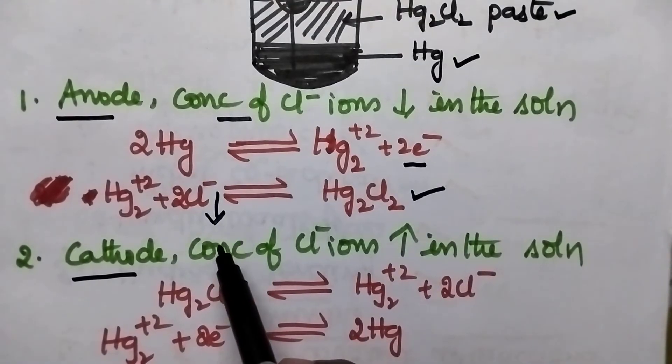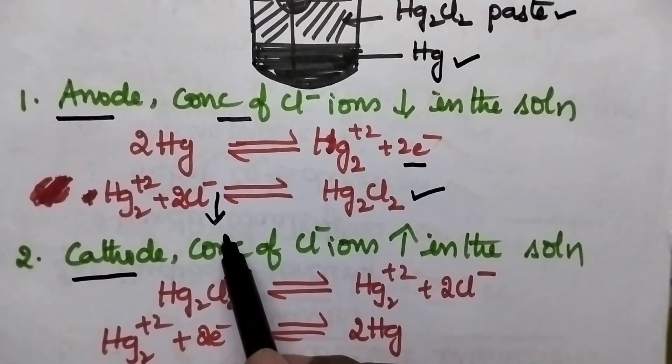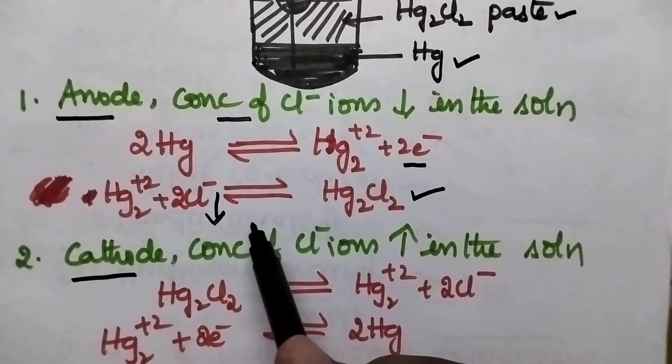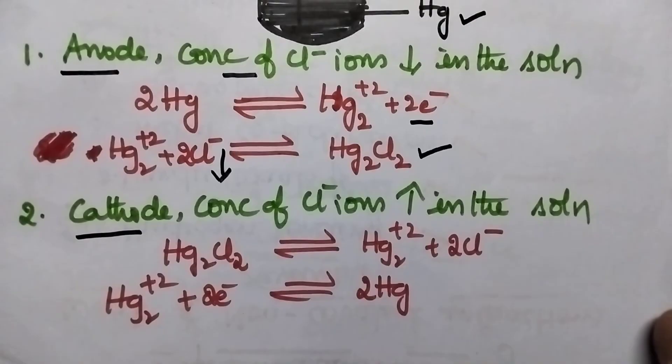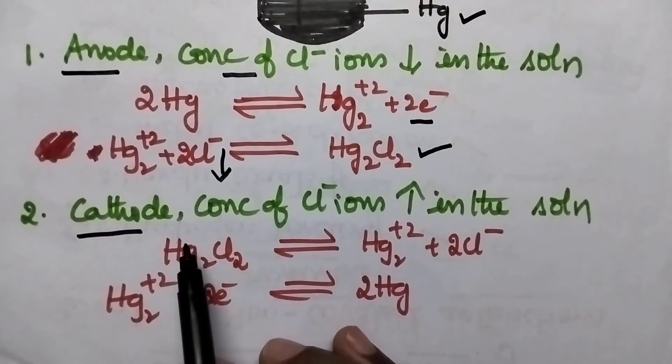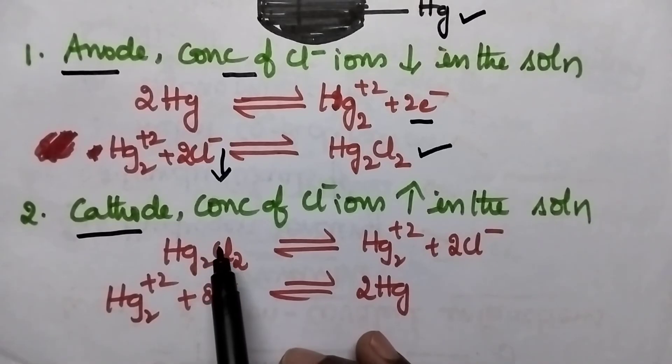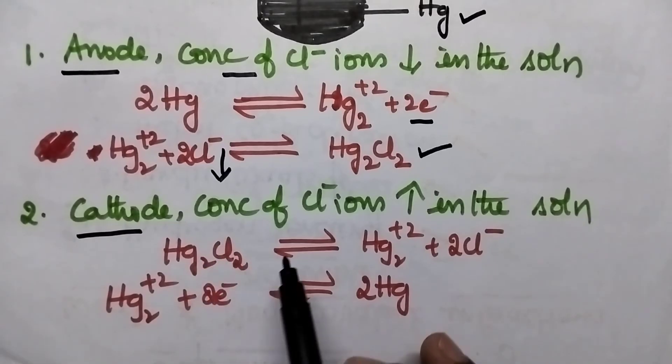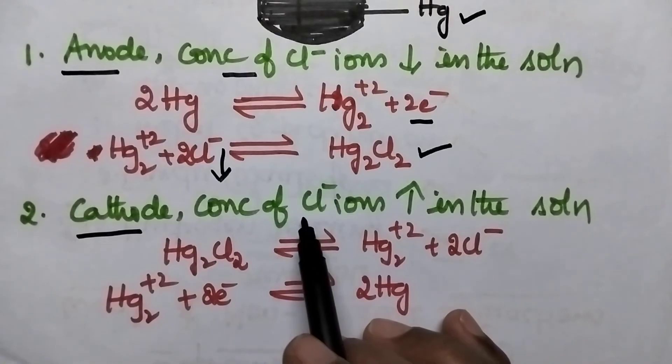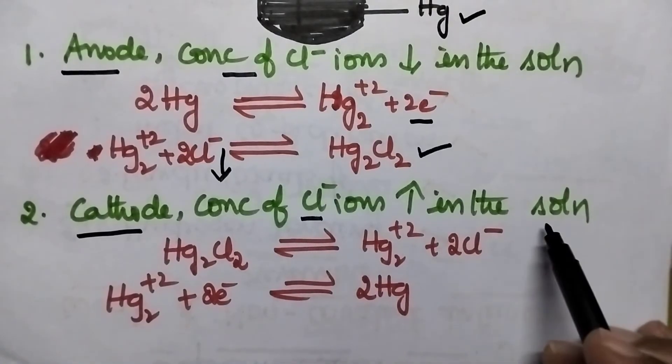In that way, always there will be some decrease in the concentration of Cl minus ions if the calomel electrode acts as the anode. On the other hand, it can also act as the cathode. So when calomel electrode acts as the cathode, always reduction takes place at the electrode and it is accompanied by the increase in the concentration of Cl minus ions in the KCl solution.